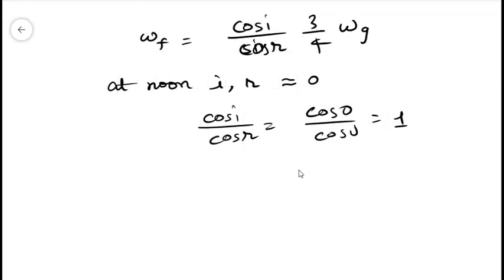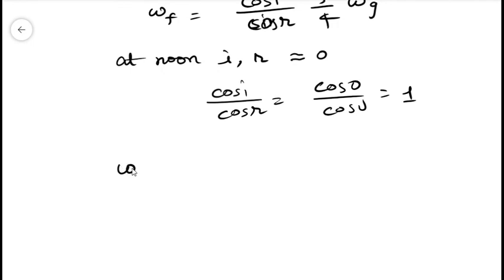And what is the angular speed of the sun for the person on the ground? Well it is simply omega g equals to the total rotation is 360 degree divided by the time it takes, that is 24 hours, and that is equals to 15 degree per hour.